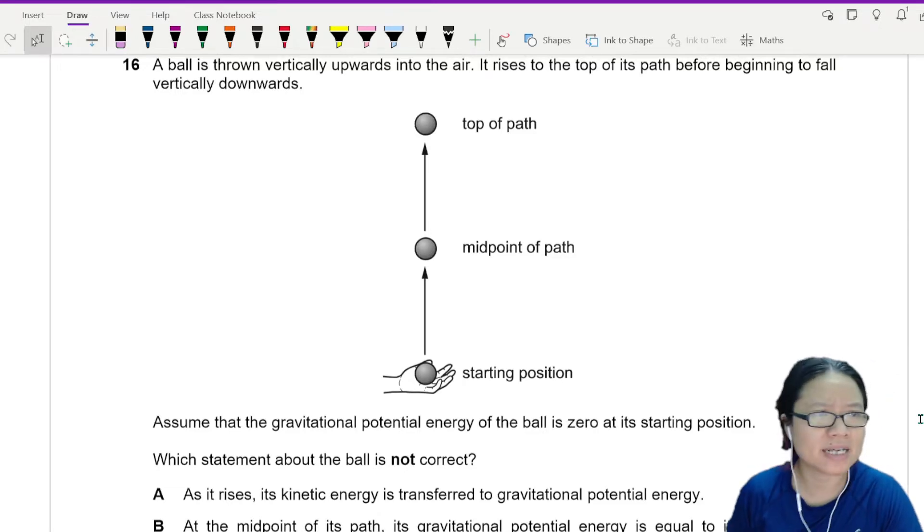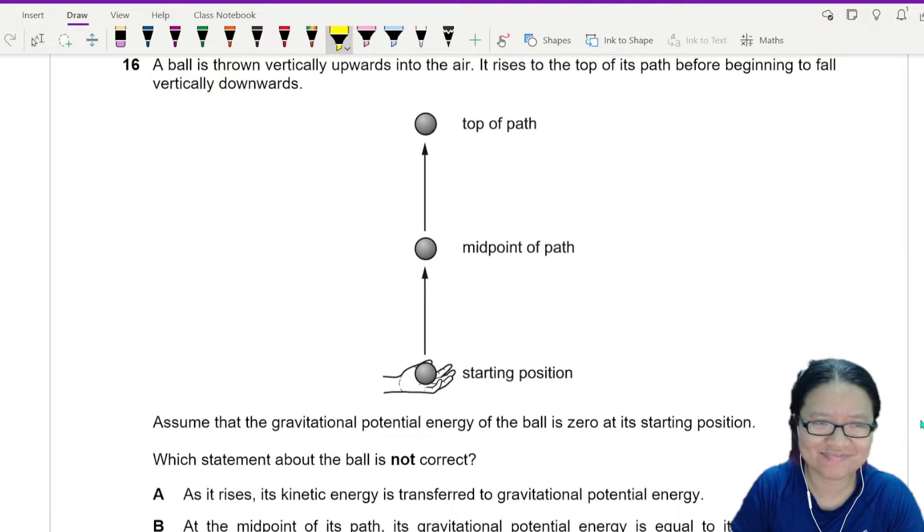A ball is thrown vertically upwards into the air. This question came out before in this same paper. They like to throw balls, I guess. It's because it's a classic physics thing. It rises to the top of its path before beginning to fall vertically downwards.